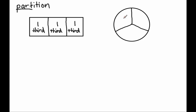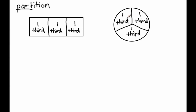Now these are equal shares. There are one, two, three shares, and they are equal shares. Each share we will call a third, because a third is one of what it takes three of to make a whole. So this is a third, this is a third, and this is a third. Why is this piece called a third? Because it is one of what it takes one, two, three of to make a whole. Why is this piece called a third? Because it is one of what it takes one, two, three of to make a whole.